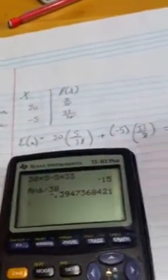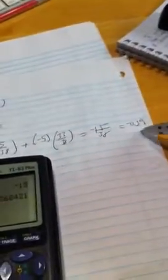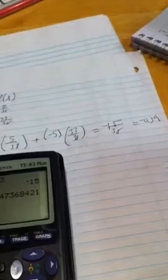So if I divide by 38, I'm going to get negative 0.39. So I'm going to lose about 39 cents every time I play. Okay.